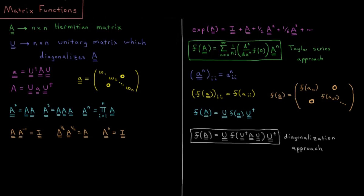This video will discuss two different methods to compute the functions of matrices. As in much of this chapter, we'll start off by saying we have a matrix A, which is an n by n Hermitian matrix — an n-dimensional Hermitian matrix.